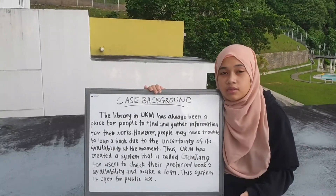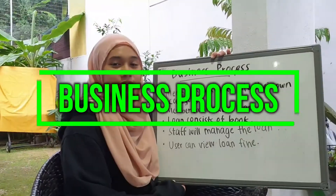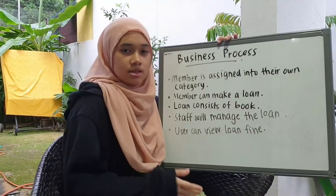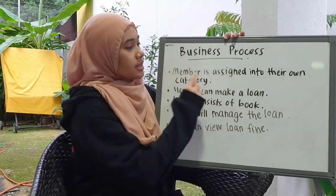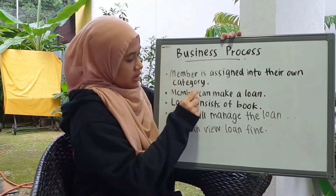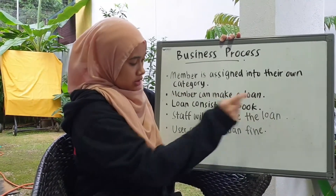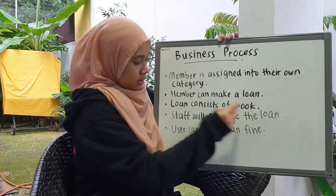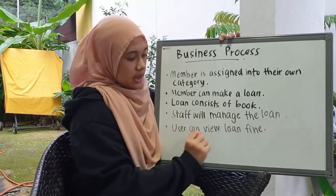This system is for public use. There are five processes in this topic: Member is assigned into their own category. Member can make a loan. Loan consists of books. Staff will manage the loan. And user can give a loan fine.